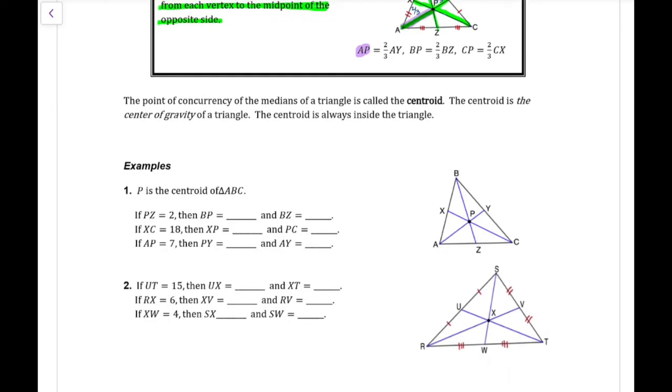This point of concurrency is called the centroid. And the centroid is also the center of gravity of a triangle. Let's go ahead and do some examples of this.